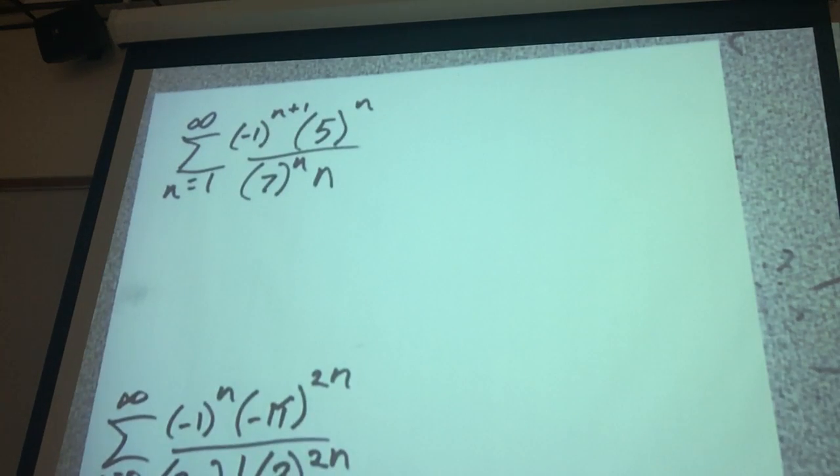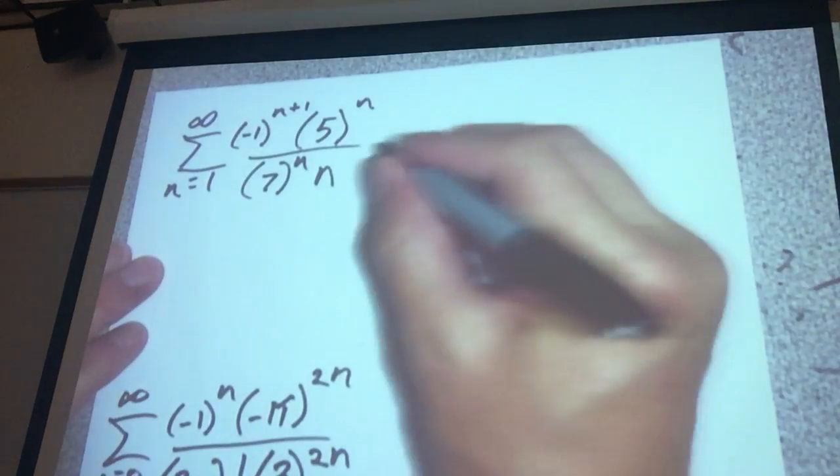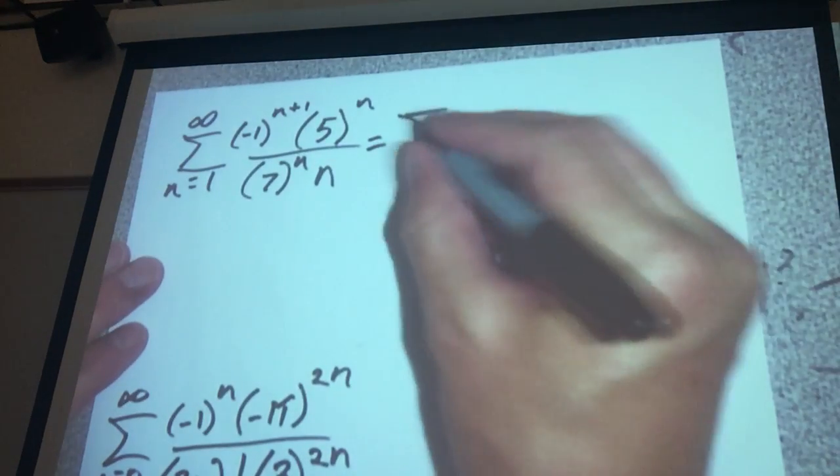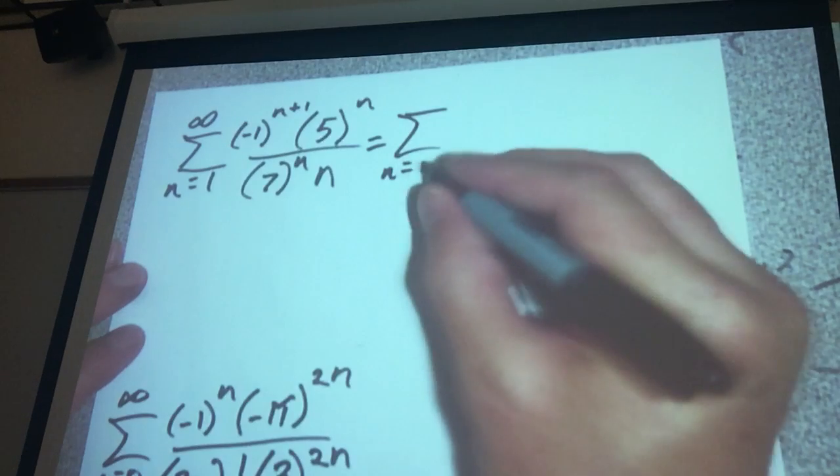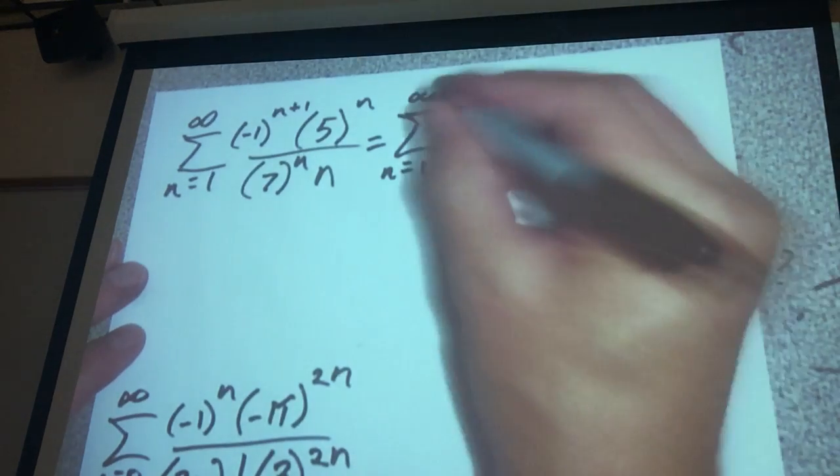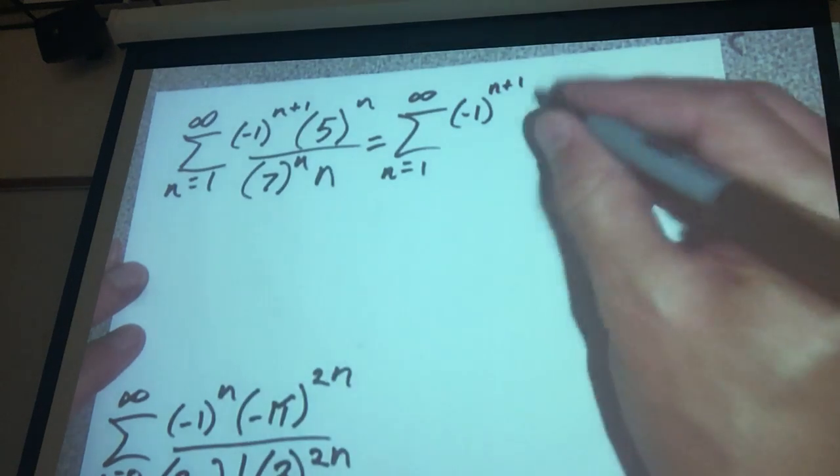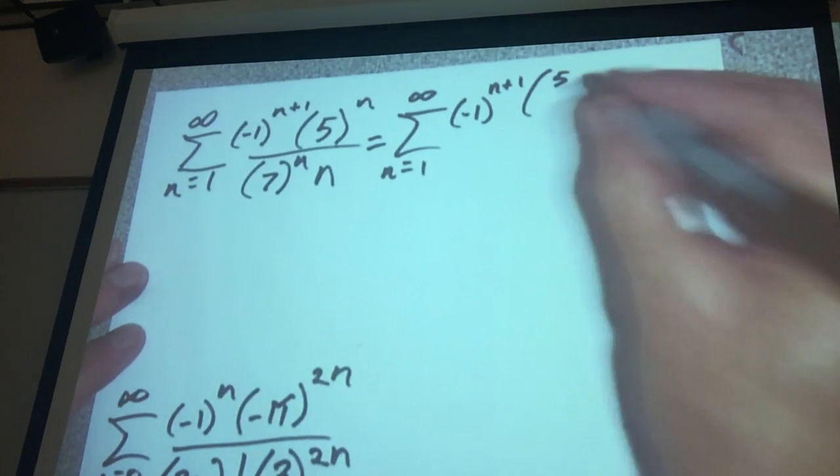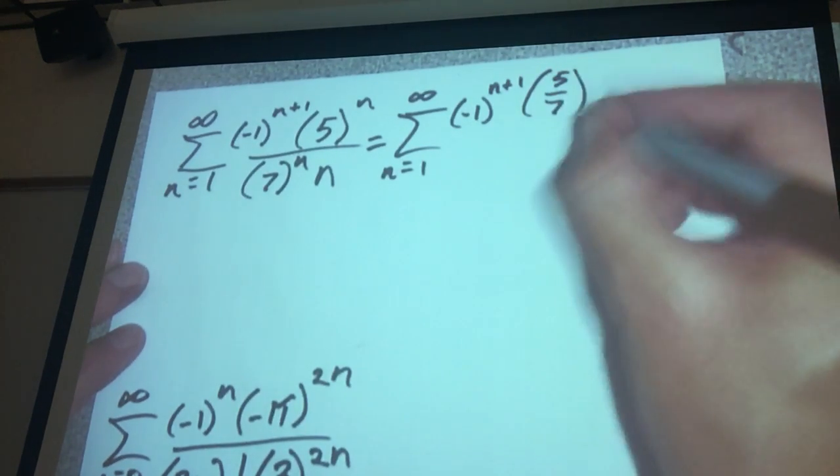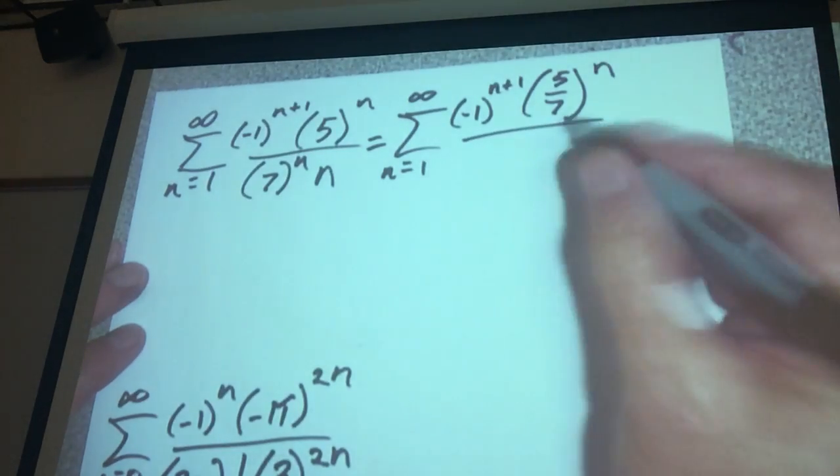Now if you were going to rewrite this problem, another way to rewrite this one is the sum n which equals 1 to infinity of negative 1 to the n plus 1, and that would be 5 divided by 7 raised to the n power, and then divided by n.